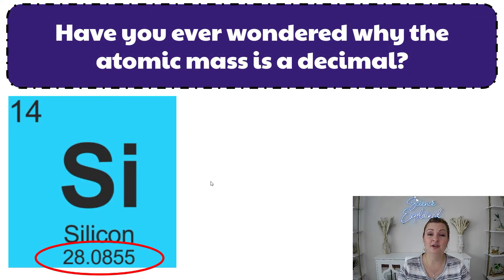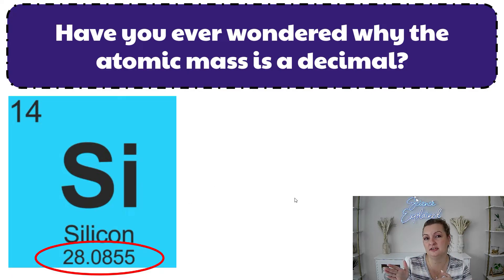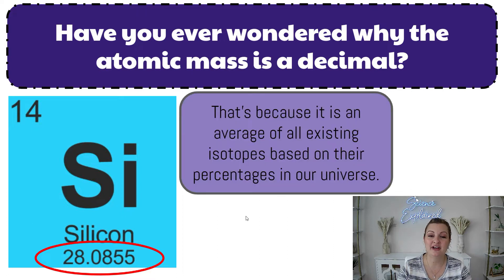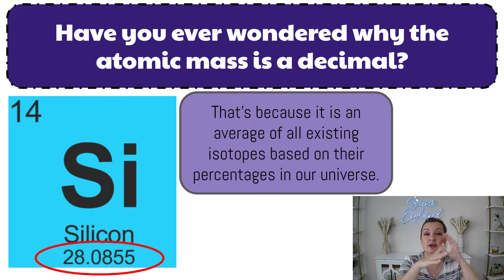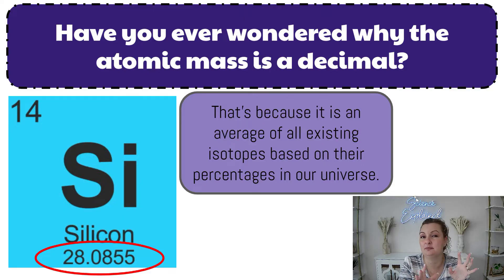So have you ever wondered why there's an atomic mass in decimal form? Because the atomic mass is protons plus neutrons, and we can't have part of a proton and we can't have part of a neutron. What's happening is it's the average of all the existing isotopes in our universe — but it's not just your normal average where you add them all up and divide by how many you have. This is actually based off of their abundance: which one is naturally occurring the most out in our universe and which one is the least, and in between.